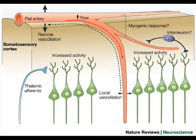Vasodilation is when the arterioles leading to the capillaries in the skin dilate or get wider, allowing more blood flow to go to the capillaries near the skin's surface. This means that more heat can be lost from the skin, and this is why you might look red when you exercise.